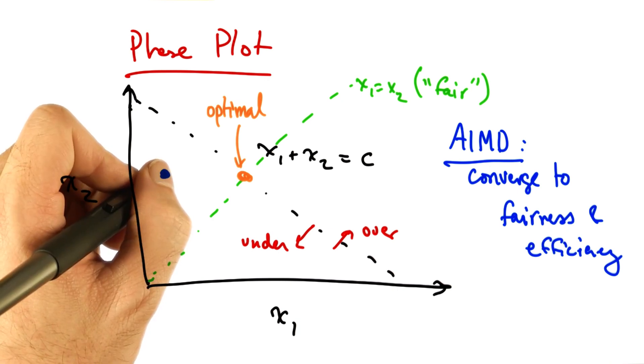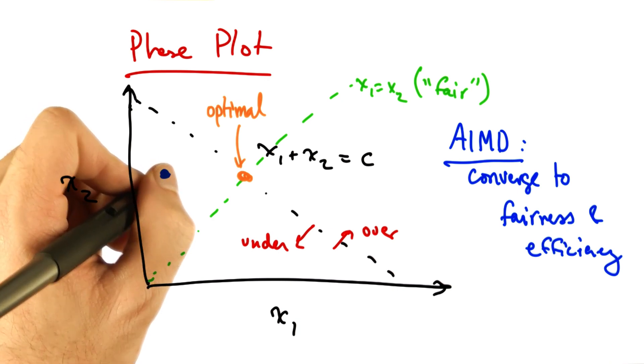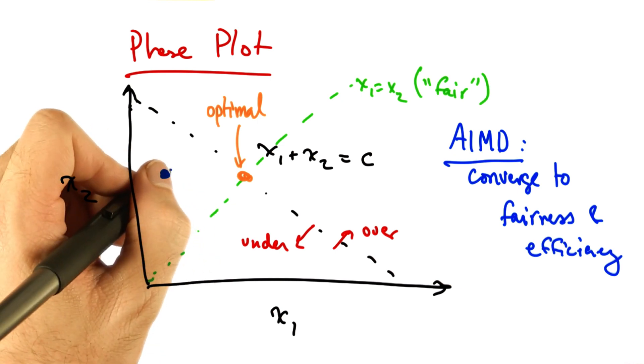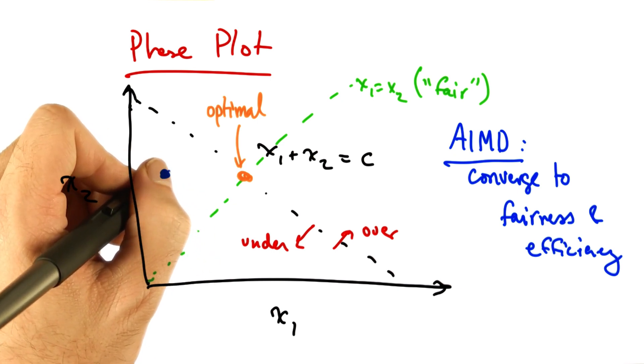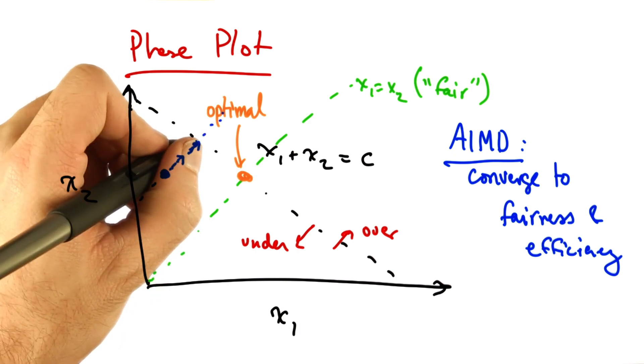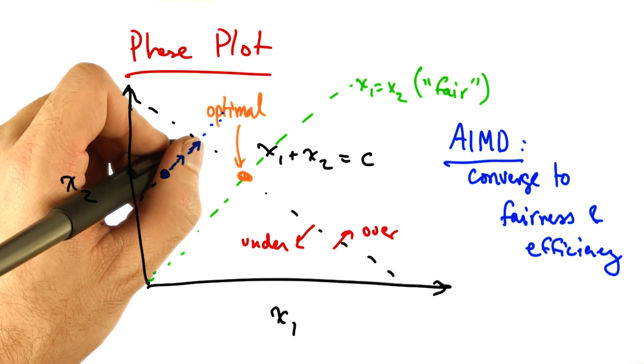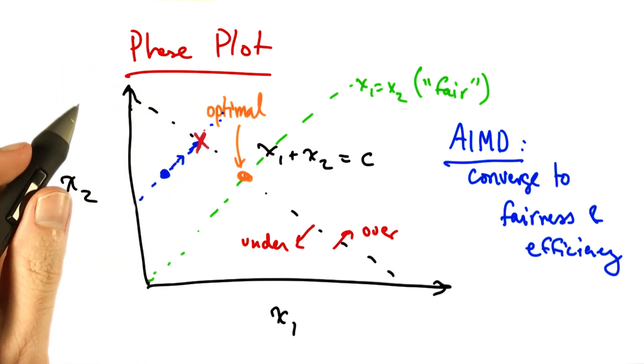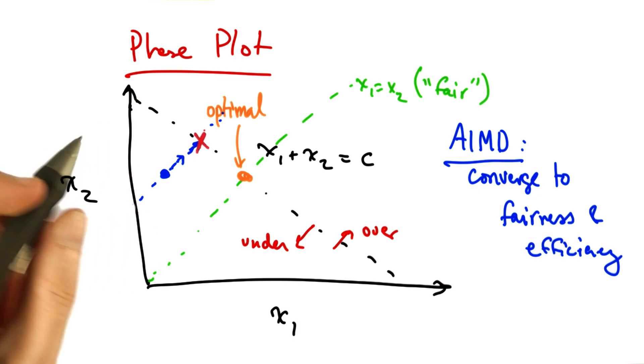Additive increase results in moving along a line that is parallel to x1 and x2, since both senders increase their rate by the same amount. Additive increase will continue until the network becomes overloaded. At this point, the senders will see a loss and perform multiplicative decrease.